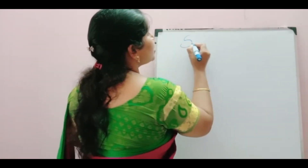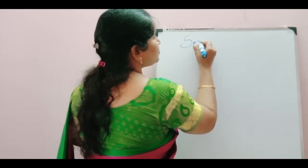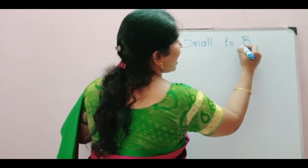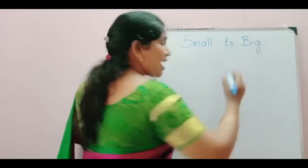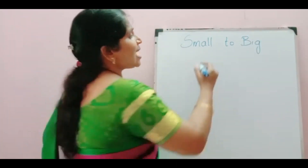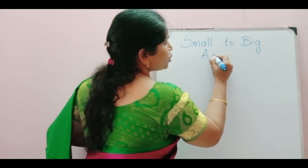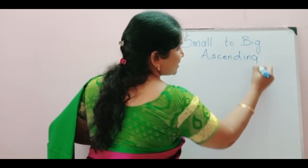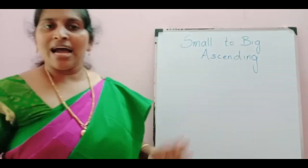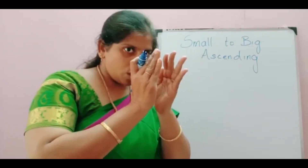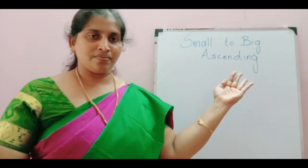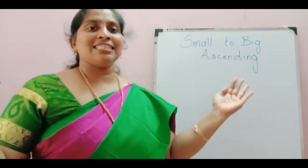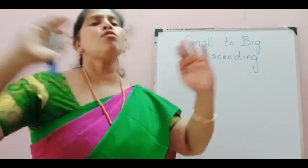See here — small number to big number is called ascending. Ascending order means small to big.